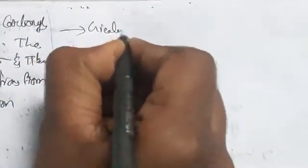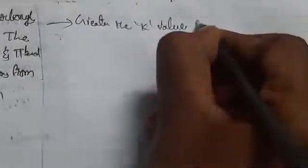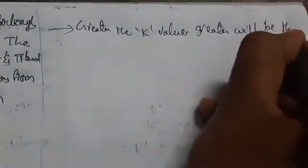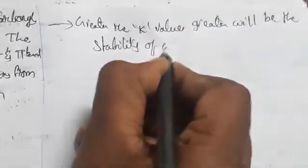The greater the stability constant K, the greater will be the stability of the complex. This is also called the instability constant or dissociation constant.